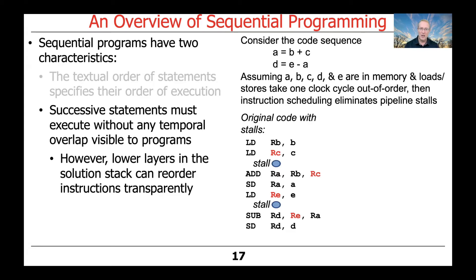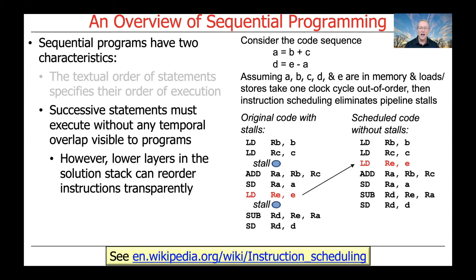Likewise, loading the value of memory location E into register E will also incur a stall before we can do a subtraction using that, because of the load taking one cycle. In contrast, if we rearrange the instructions — something that could be done by an assembly language optimizer — we can reorder things so that the load of register E from variable E in memory takes place after loading C into register C. Therefore, we're able to execute with no pipeline stalls, getting less overhead. This is a good example of instruction scheduling, but all these reorderings must be done transparently to programs and programmers.